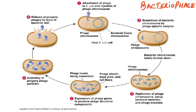Viruses invade either animal cells, plant cells, or bacteria. The virus which invades bacteria is called a bacteriophage. The process: first, attachment of the phage to E. coli; second, injection of the phage chromosome; third, breakdown of the bacterial chromosome by phage-specific enzymes; then replication of the phage chromosome using the bacterial machinery and materials.